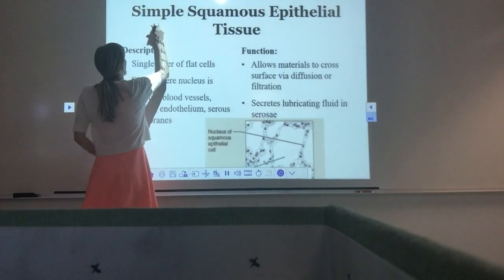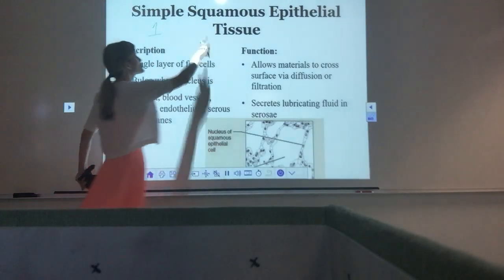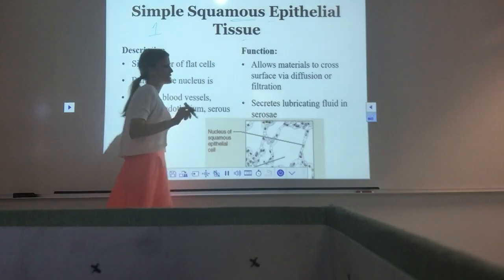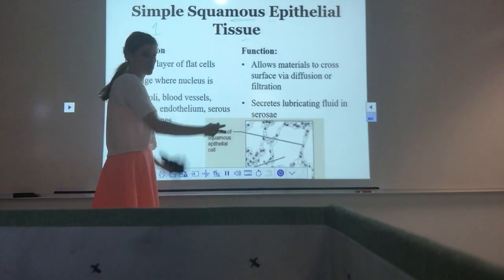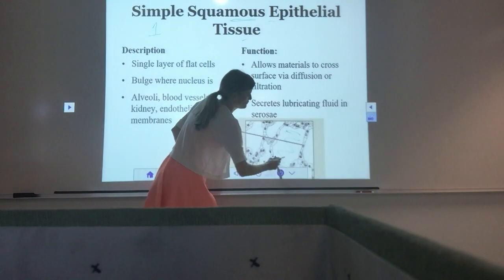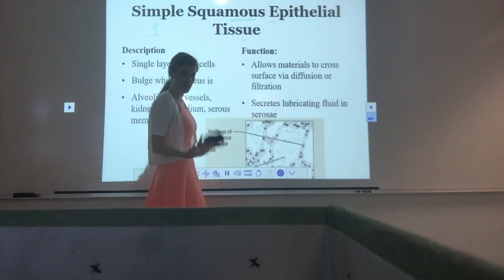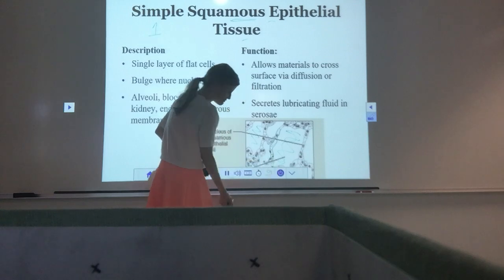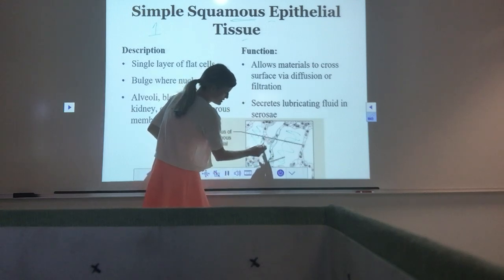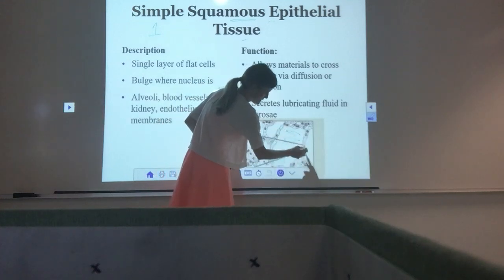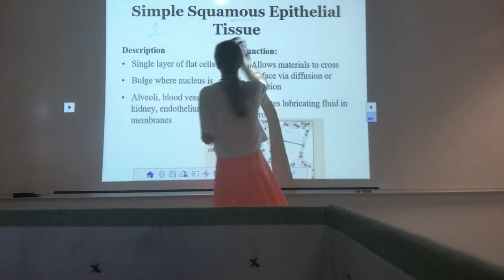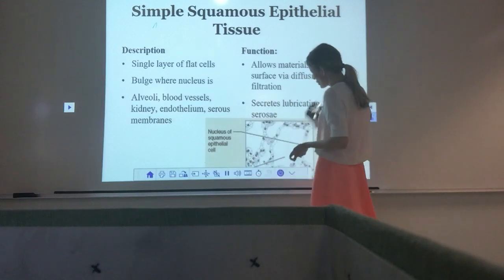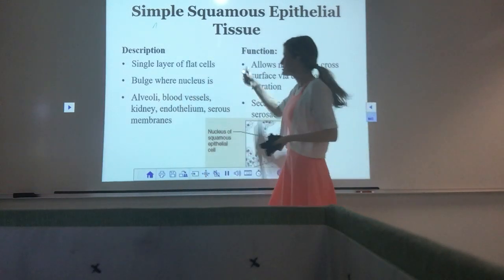Simple squamous epithelial tissue: simple means one layer of cells, squamous means the cells are really thin and flat, and epithelial means it lines some sort of open space. This is just a general drawing — there's a big open lumen, and the tissue going around the outside of it is the epithelial tissue, a single layer of long flattened cells. That's simple squamous epithelial tissue.